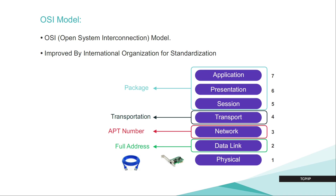Some engineers also use the layer number. Physical is layer one, data link is layer two, network is layer three, transport is layer four, session is layer five, presentation is layer six, and application is layer seven.